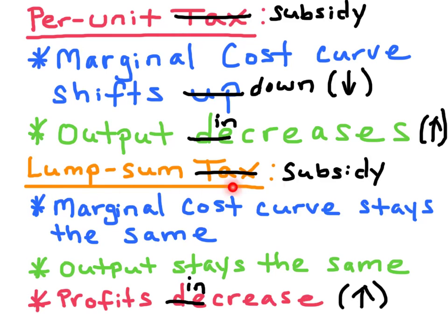If it was a lump sum subsidy, there would be no change in marginal cost. However, it would lower the average total costs and the fixed costs. But because marginal cost stays put, the output will also stay constant. The economic profit would increase for the firm.